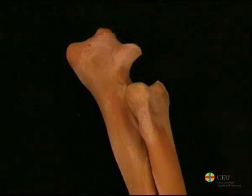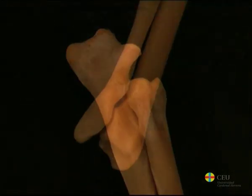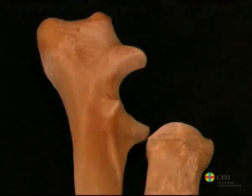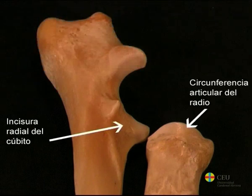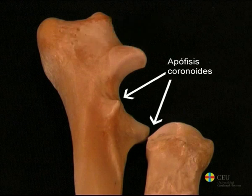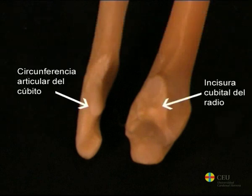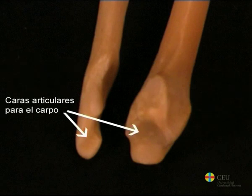In carnivores, the radius and ulna are not fused, and the articulation between them is done at each end, allowing a slight movement of supination. In the proximal extremity, the articular surfaces of the bones are the articular circumference of the radius and the radial notch of the ulna. This is determined on both sides by the coronoid processes, which encompass the proximal extremity of the radius. The joint at the distal end is made by the ulnar notch of the radius and the articular circumference of the ulna. In addition to each other, these bones also articulate with the carpus, and they have processes at their distal ends for this purpose.